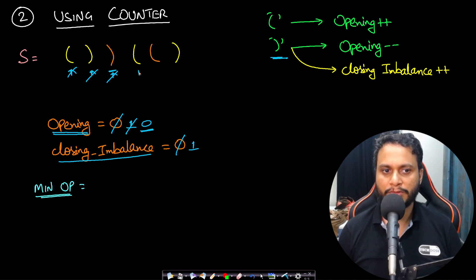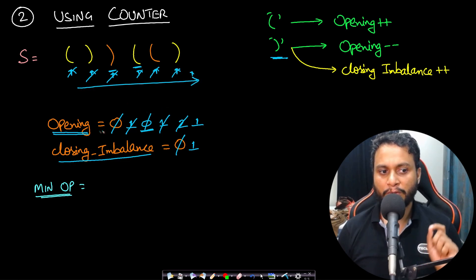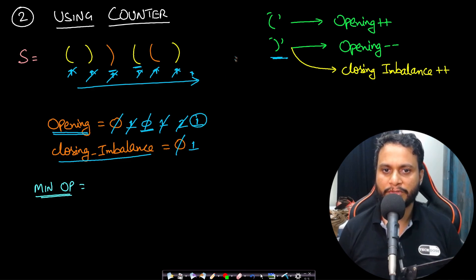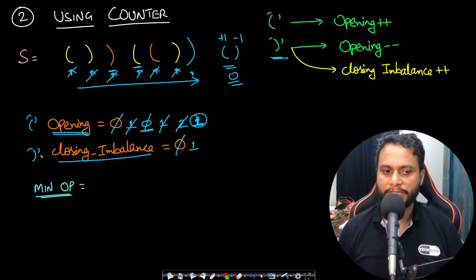Going through the string: opening bracket — add one; another opening bracket — add one; closing bracket — decrease by one. At the end, if the opening value is non-zero — say one — it means there is one opening bracket that needs to be balanced by adding a closing bracket at the end. The opening variable accounts for over-balanced opening brackets; closing imbalance accounts for over-balanced closing brackets.